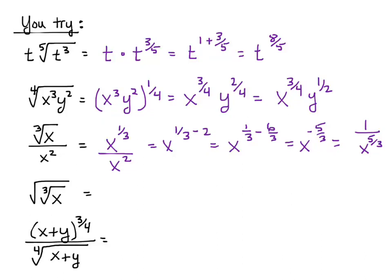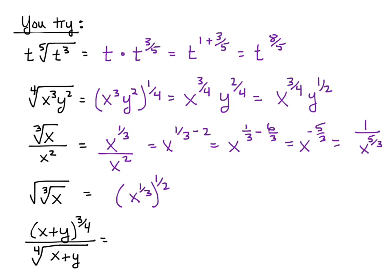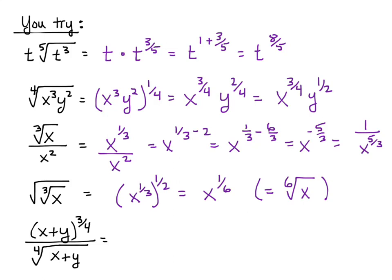On a problem like this, you write it in two steps. First, what's inside the square root is just x to the one-third. Then the square root can be viewed as whatever's in the parentheses to the one-half. We use the power-to-power rule to multiply those two and get x to the one-sixth. So we can write that as the sixth root of x, or leave it as x to the one-sixth.